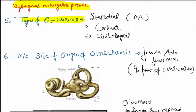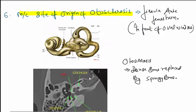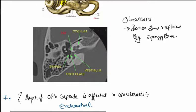Types of otosclerosis: stapedial is the most common type. Origin of otosclerosis is fissula ante fenestrum, in front of oval window. On radiology or CT scan, we can see fissula ante fenestrum. Otosclerosis is dense bone replaced by spongy bone.